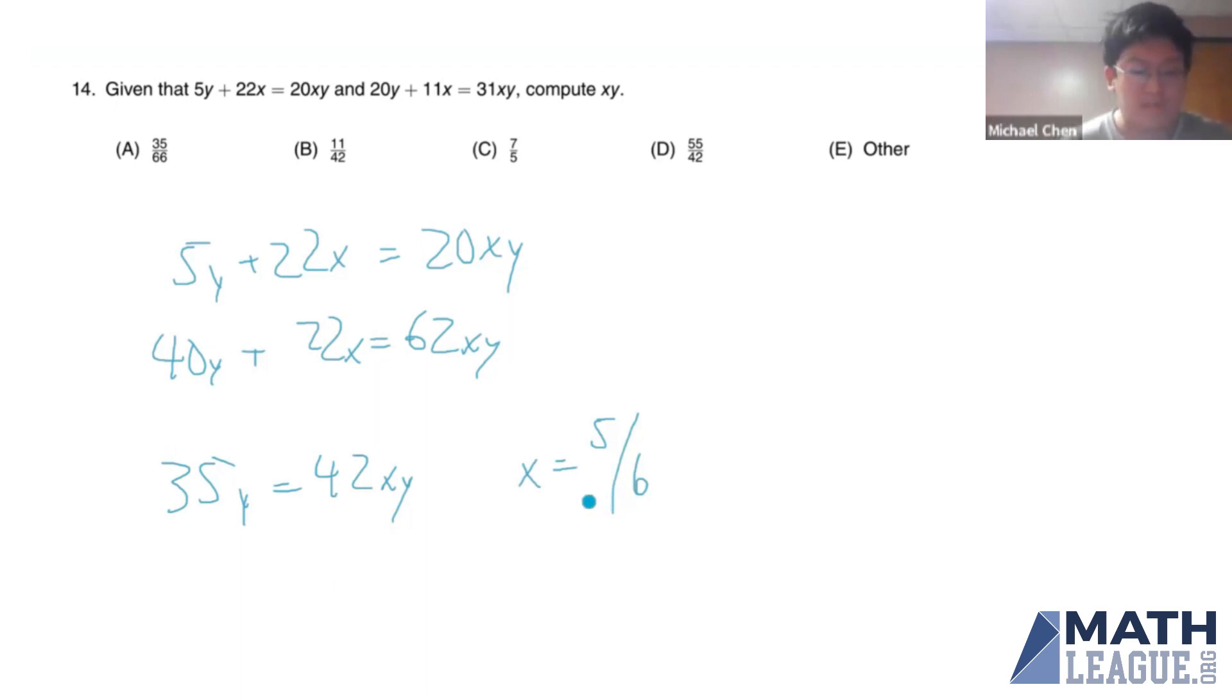We know that x is equal to 5 sixth. And therefore, we can also solve for y at this point by plugging it back into either of our original equations.